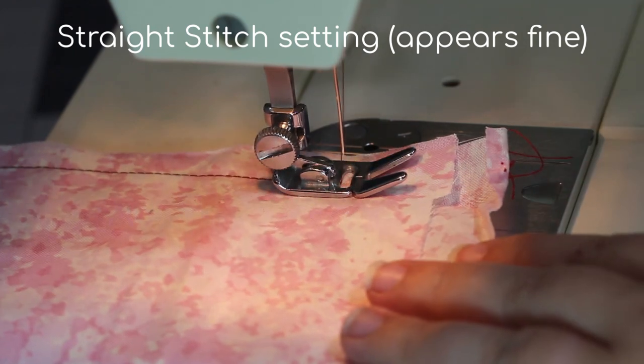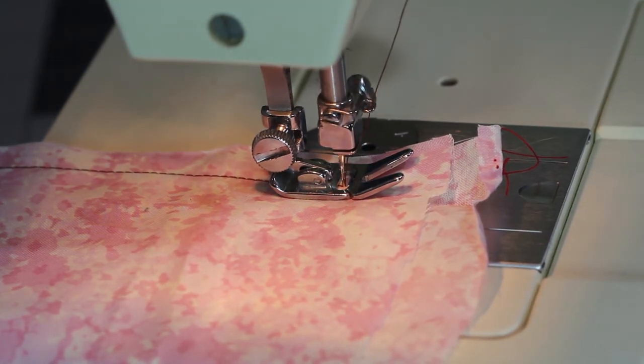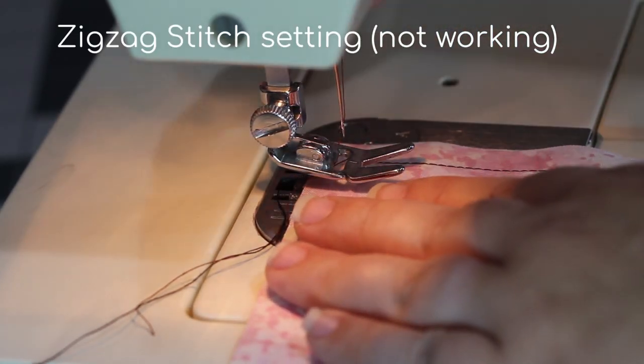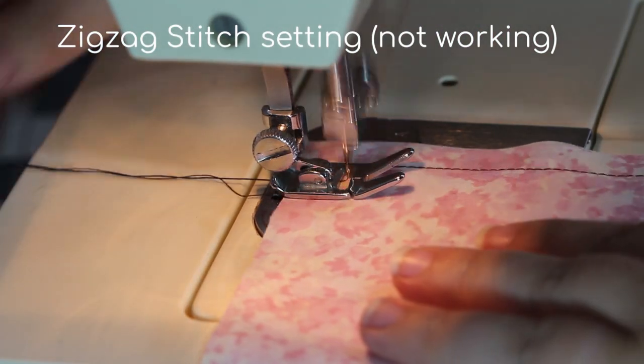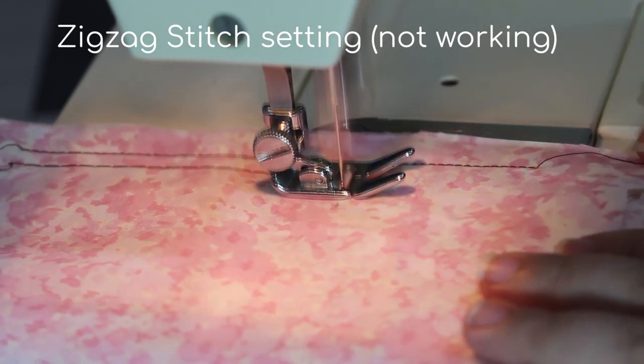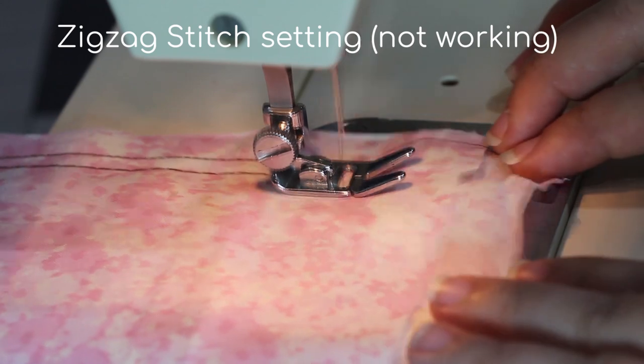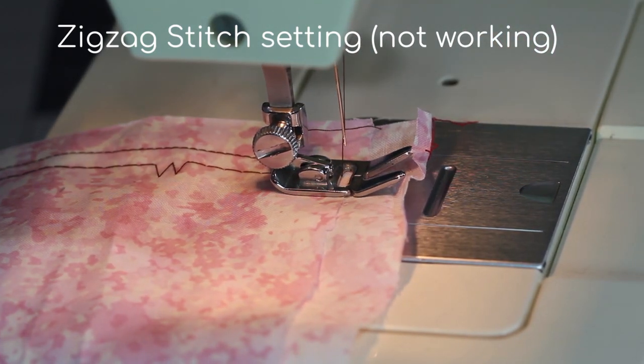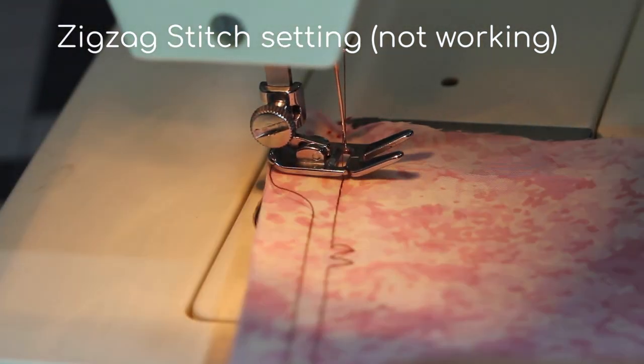This first line of stitching is a straight stitch, and it appears fine. However, this second line of stitching is the widest zigzag stitch the machine can make. As you can see, it skipped most of the zigs and most of the zags, and it actually only created a few. Otherwise, it skipped the bulk of the stitches.